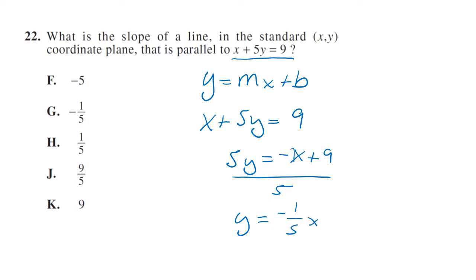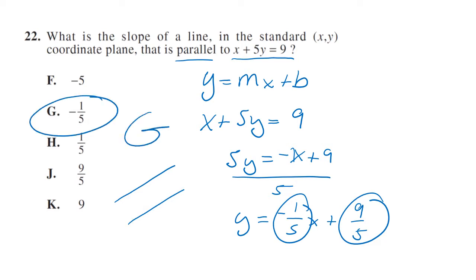Plus nine over five. We didn't really need to worry about that because that's the y-intercept. This is the slope, so we want a parallel line which means it's going to have the same slope. They're running together, so your answer is G. If this had been an opposite, the slope would be the opposite and reciprocal. So perpendicular line would be opposite, that would have been five over one. ACT usually asks about parallel or perpendicular.